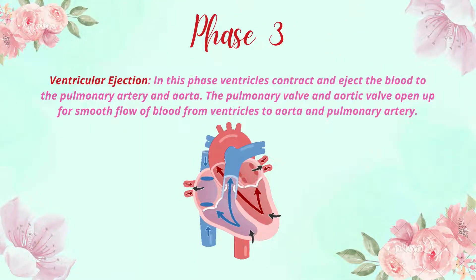Phase 3 is ventricular ejection. In this phase, the ventricles contract and eject blood to the pulmonary artery and aorta. The pulmonary valve and aortic valve open up for smooth flow of blood from the ventricles to the aorta and pulmonary artery.